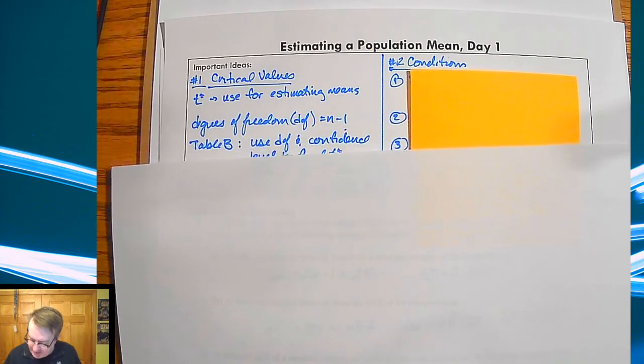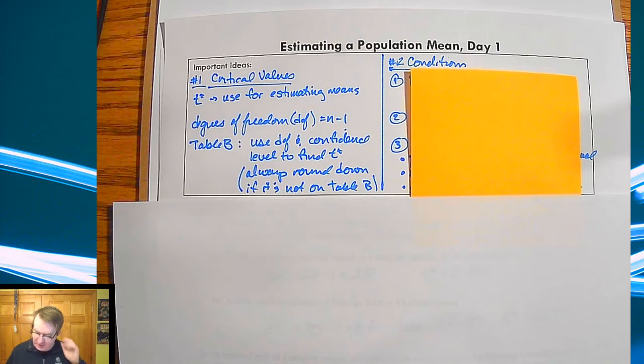First of all, critical values. We're going to use this thing called t-star. Remember, the more that you have, the bigger of a sample that you have, the tighter and taller your normal curve will be. Because of that, theoretically if you had a sample size of infinity, your t-score would be the same thing as our z-scores used to be.